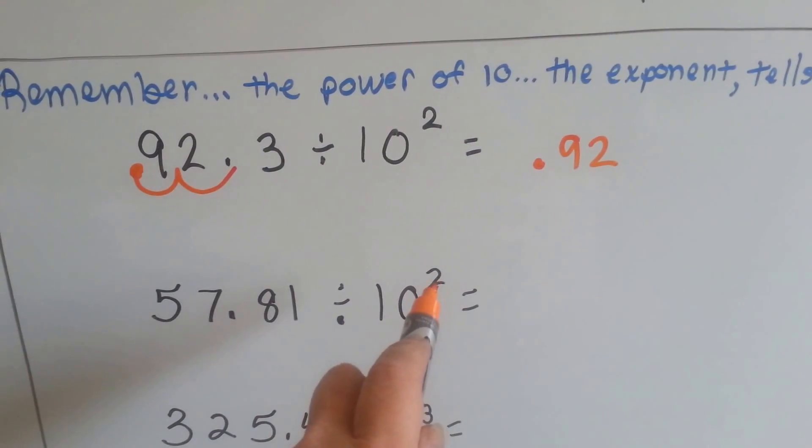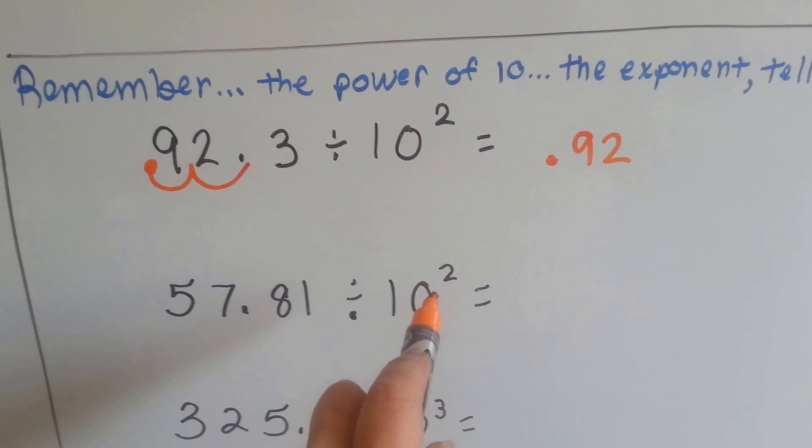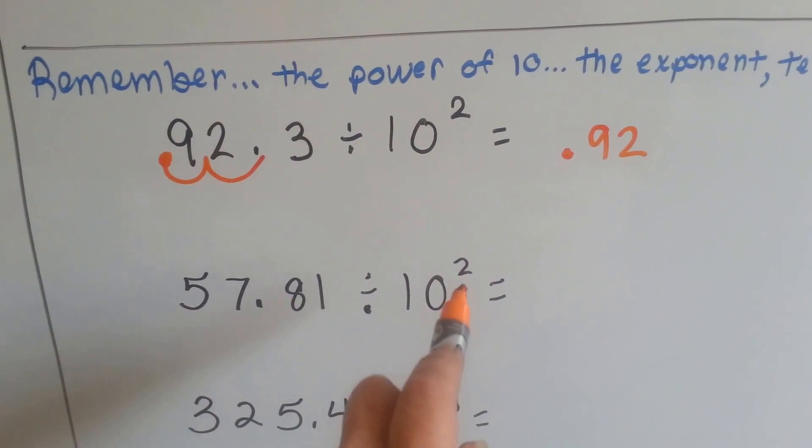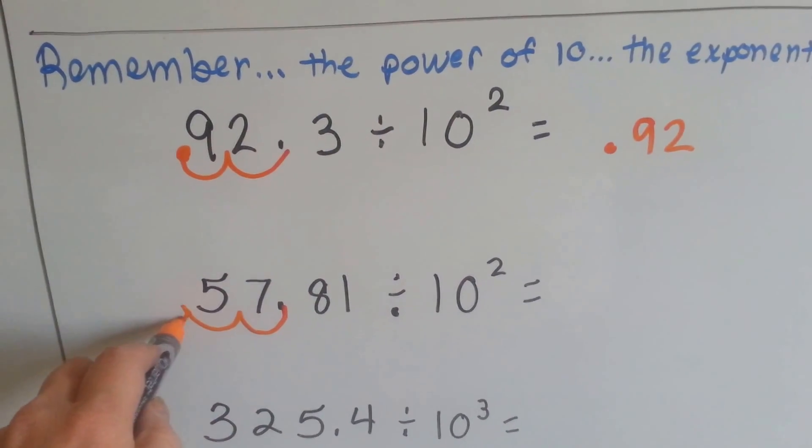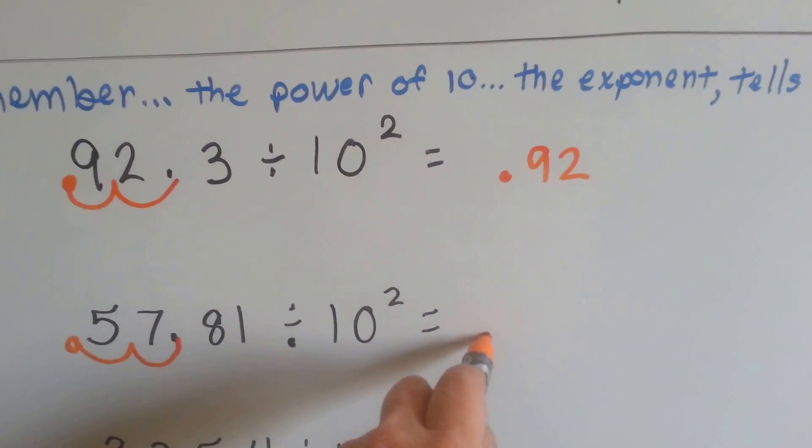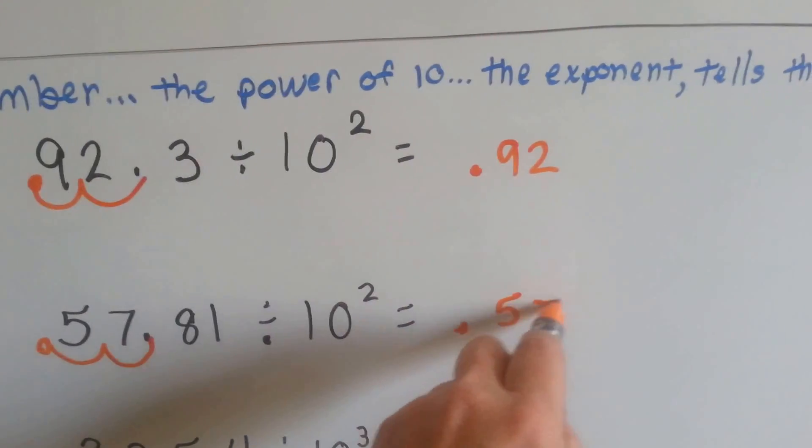Alright, 10 to the second power, how many hops are we going to make? If you said 2, you're right, so we're going to go hop once, hop twice, and now our answer is 0.5781.